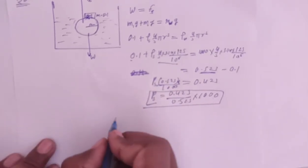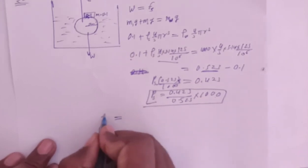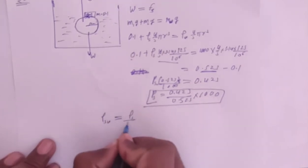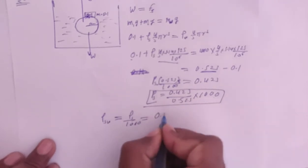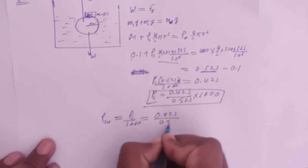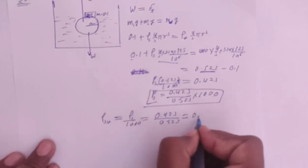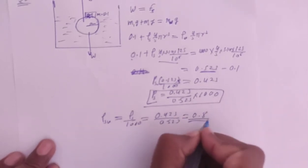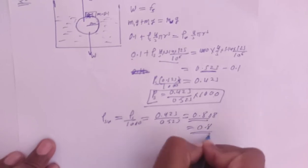Now find specific gravity: specific gravity equals density of sphere divided by density of water, which is density of sphere divided by 1000. So the answer is 523 divided by 1000, which gives approximately 0.523, and solving more precisely the answer will be 0.808.